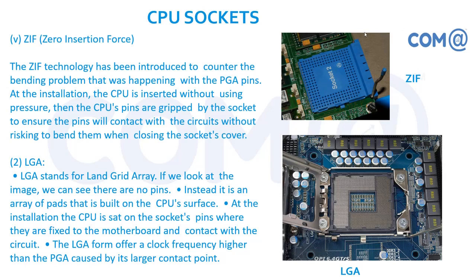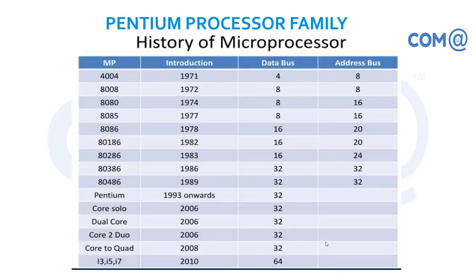LGA — Land Grid Array. Instead of holes, the processor base has contact points. On the motherboard side you have a grid arranged like a matrix with embedded dots, and the processor also has dots in an array structure. Based on the corners you identify the correct orientation — there is a cut on the socket, and you match the corresponding cut on the processor, place it, close the lid, and lock the lever. The processor cannot move once locked. These different socket families are mainly for Intel.